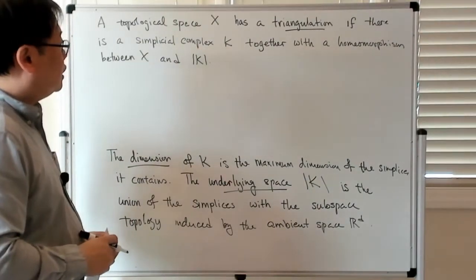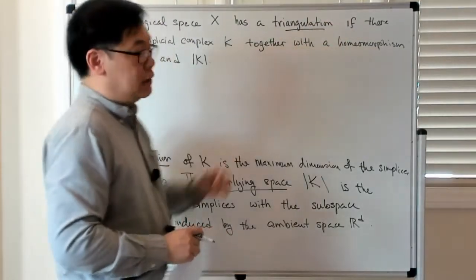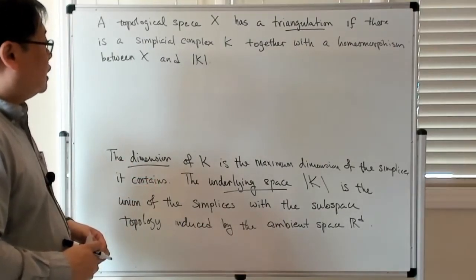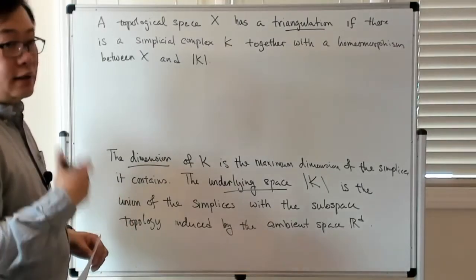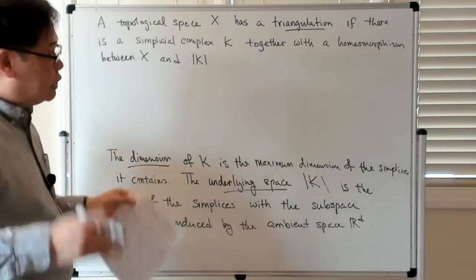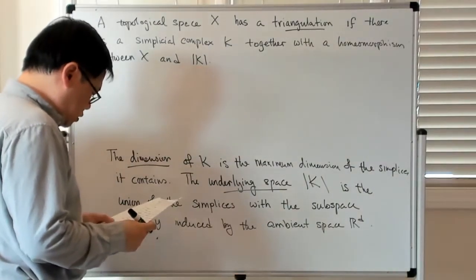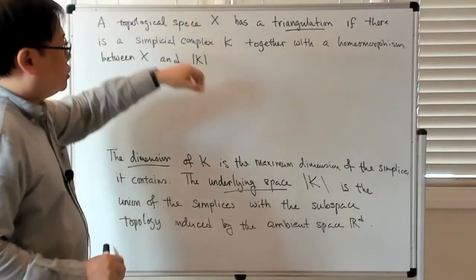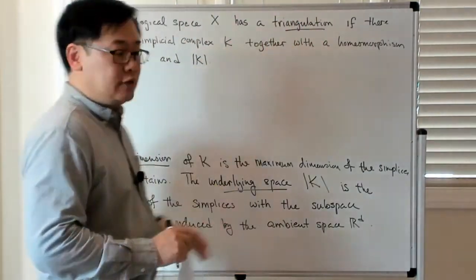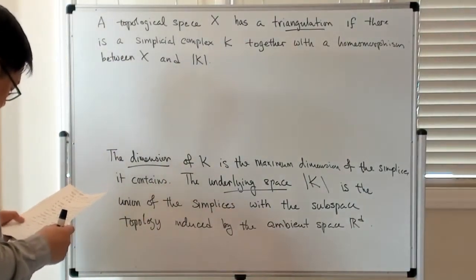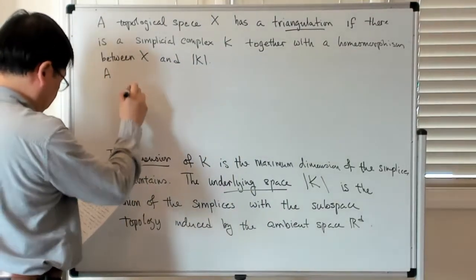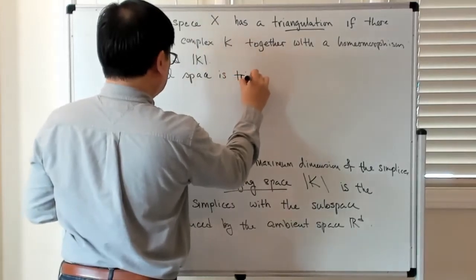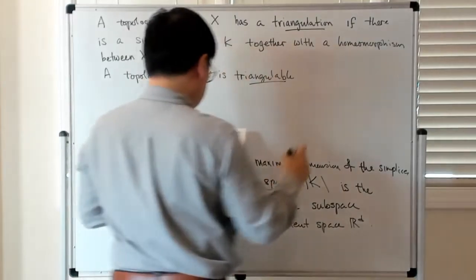As is always the case when we work with topology, if you have things which are homeomorphic to each other, then the topological invariants are invariant — that's almost a tautology, because by definition a topological invariant is insensitive to things which are homeomorphic to each other. Hopefully it's clear why you want to introduce the notion of triangulation: we want to replace a topological space with a simplicial complex and then do the calculations on the simplicial complex itself. We say that a topological space is triangulable if a triangulation exists.